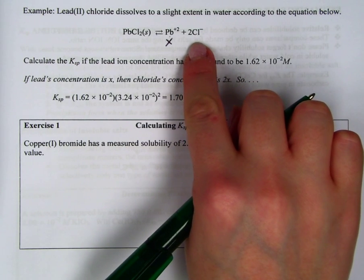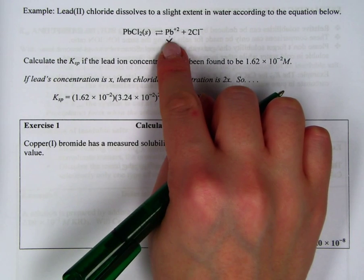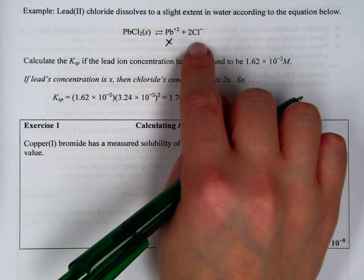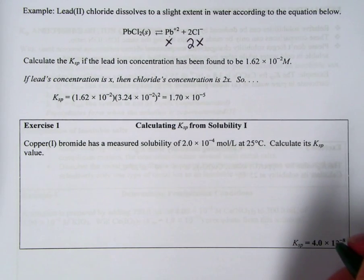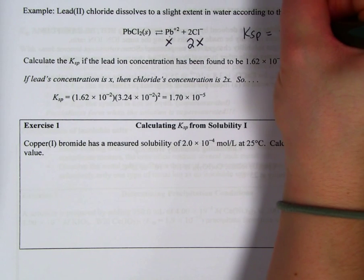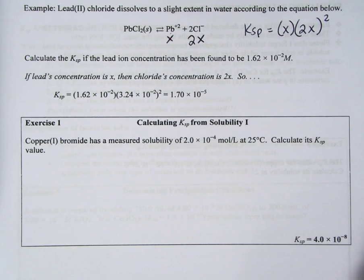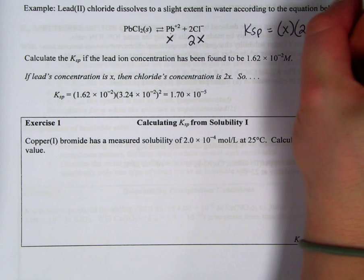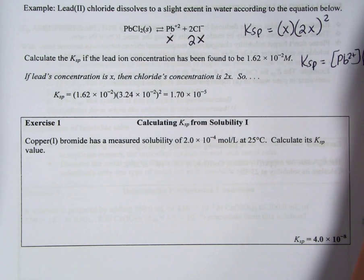So we know that would be x. So what's the Cl? Well, say I have 1 PbCl2. I make 1 Pb and 2 Cls. So for every x. So what I know is my Ksp equals the x for the Pb and the 2x squared. Why the heck is it squared? Well, let's look at this. Ksp for this equation if I just were to write it. Pb2+ times Cl- squared.